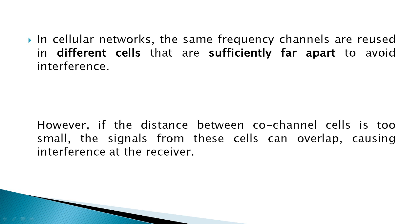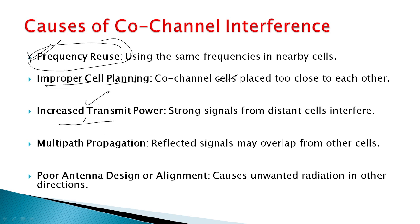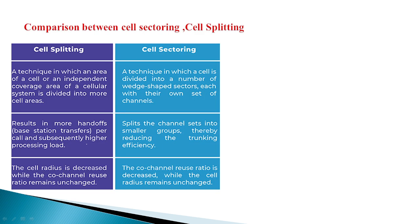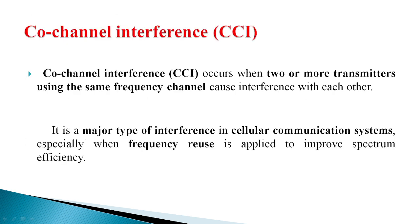The causes of co-channel interference include: the frequency reuse concept, improper cell planning, increase in transmitting power, multipath propagation, and poor antenna design and alignment. These are the causes of co-channel interference. Thank you — if you have any doubts, you can send them to me.